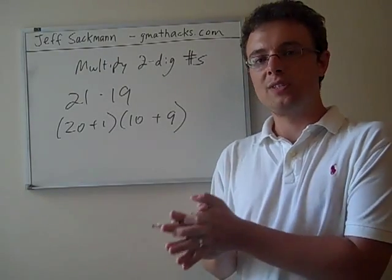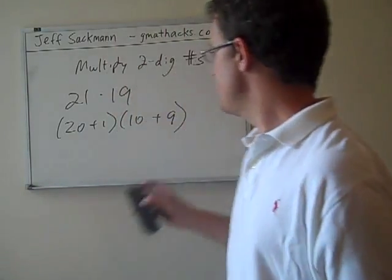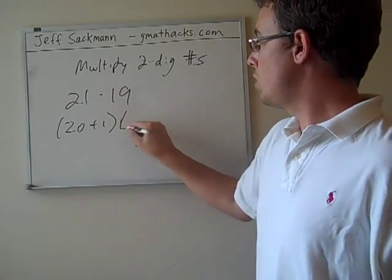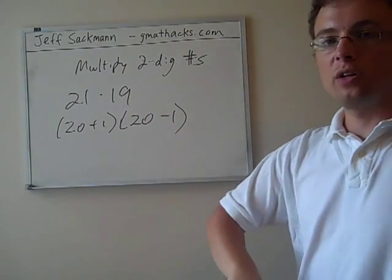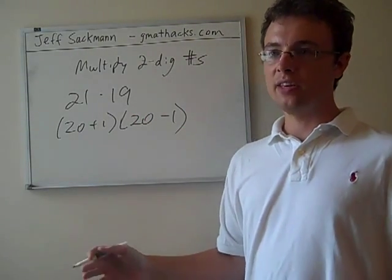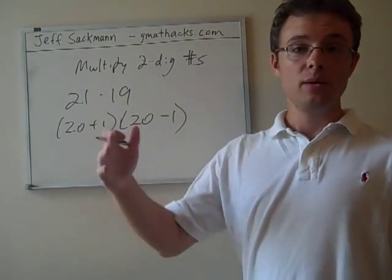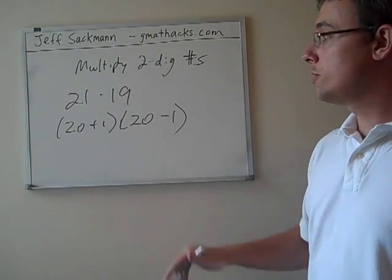Instead of 10 plus 9, let's stick with 1s. 1s are easy. So 20 minus 1. Doing pretty simple math here, all I'm saying is that 19 could be 10 plus 9, but it could also be 20 minus 1.